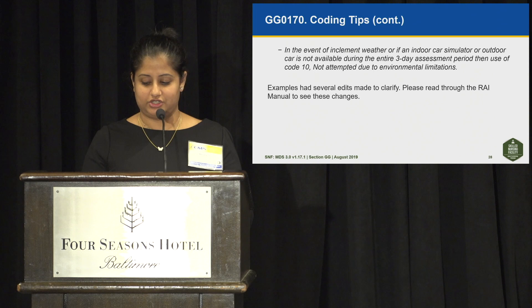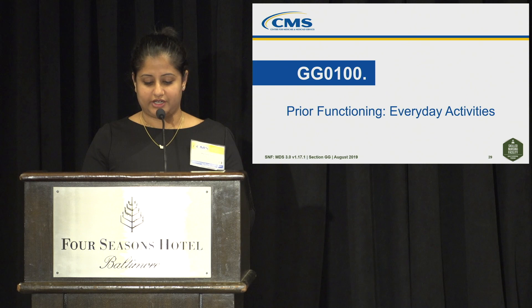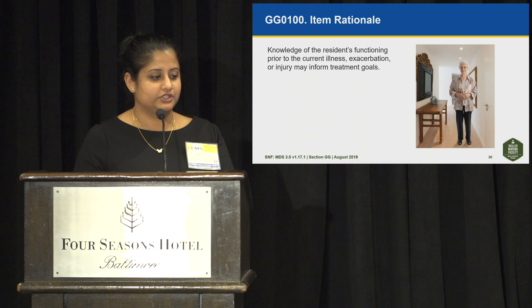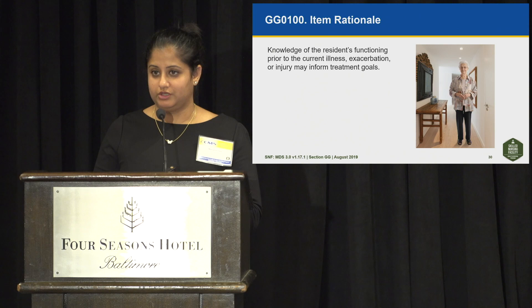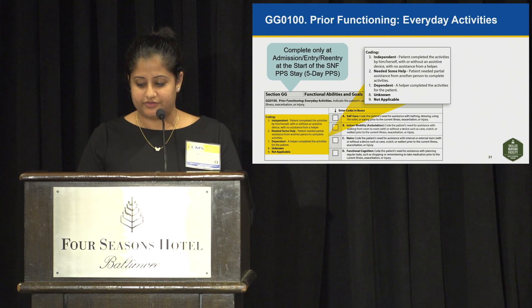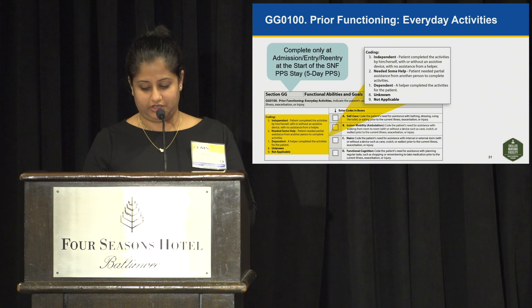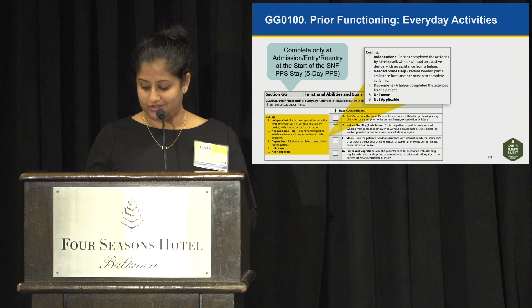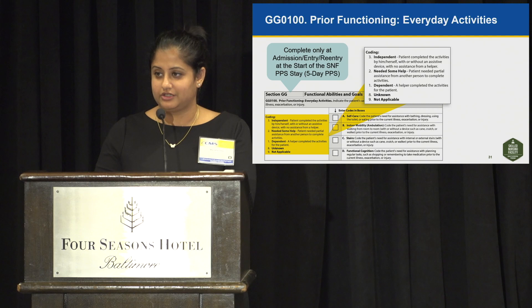We're going to move on to prior functioning, which is GG0100. This item is used in risk adjustment for the quality measures and gives knowledge regarding the resident's functioning prior to the current illness, exacerbation, or injury. Prior functioning everyday activities includes four groups: GG0100A self-care — need for assistance with bathing, dressing, using the toilet, or eating; GG0100B indoor mobility or ambulation — walking from room to room with or without an assistive device; GG0100C stairs — internal or external stairs with or without a device; and GG0100D functional cognition — planning regular tasks such as shopping or remembering to take medication.